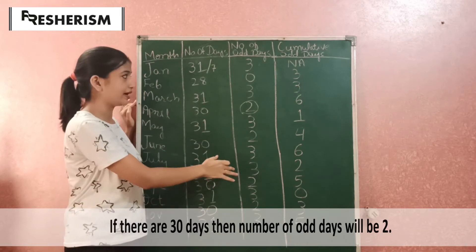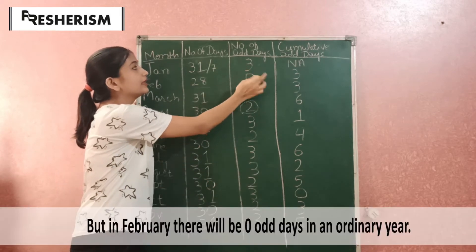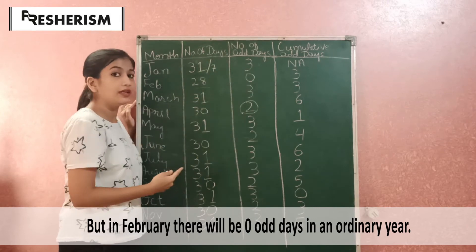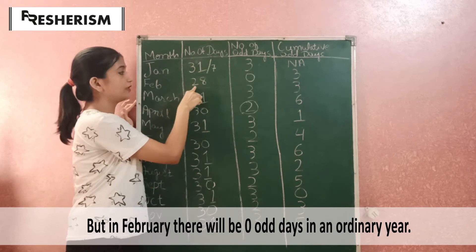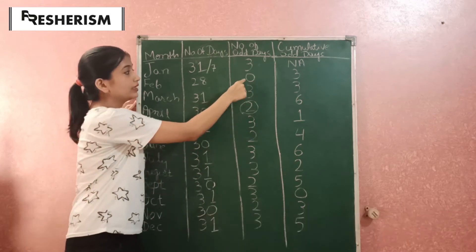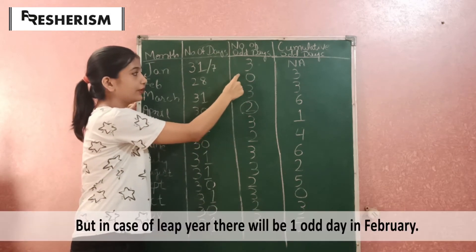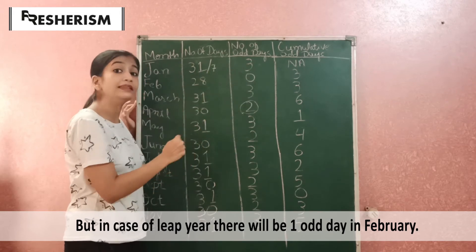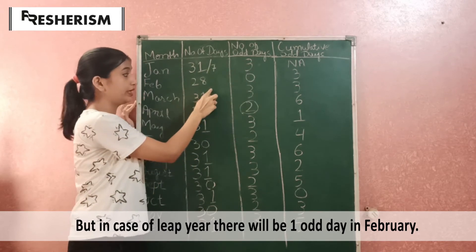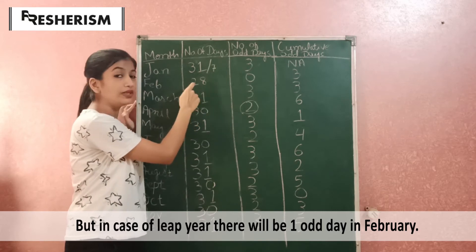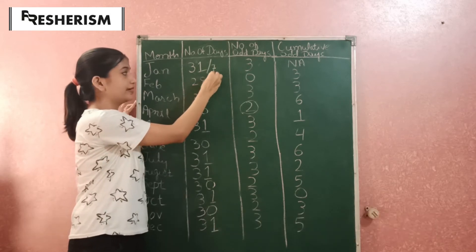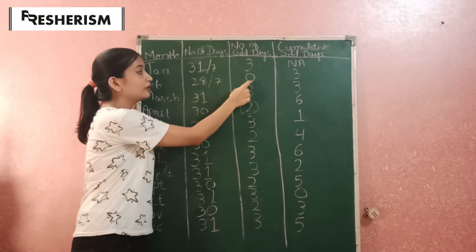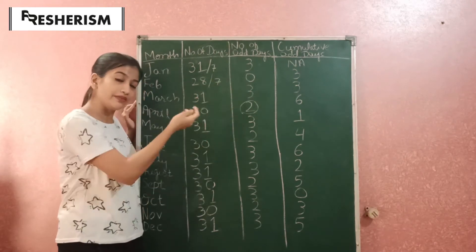We can easily remember the entire chart. But in February, there will be 0 odd days. This table is for an ordinary year, not a leap year. Because in a leap year, there will be 29 days in February, so there will be one extra odd day — since 29 divided by 7 gives a remainder of 1. But in an ordinary year, there are only 28 days, and 28 divided by 7 gives a remainder of 0, so 0 odd days.